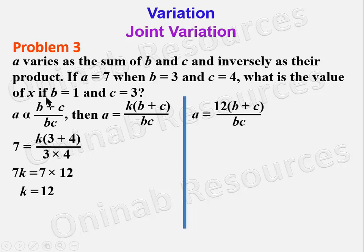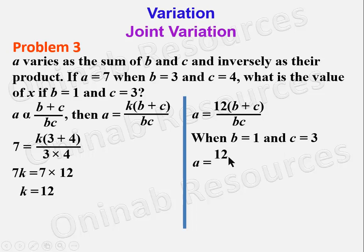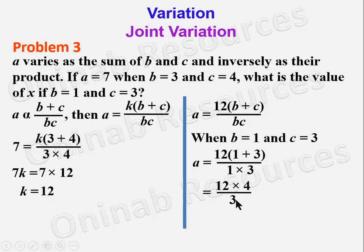When b = 1 and c = 3: a = 12(1 + 3)/(1 × 3) = 12 × 4/3. That gives 12 divided by 3 = 4, times 4 = 16. So a = 16. That is the end of the solution to problem 3.